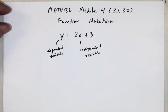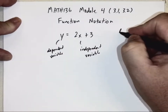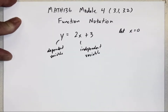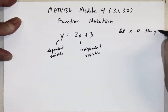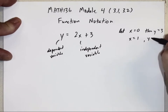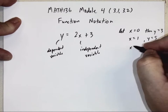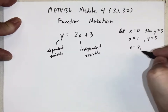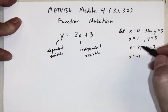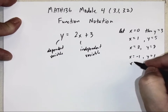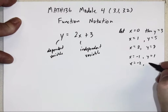You probably learned years ago with these kinds of equations that we can choose some numbers to plug in for x, our independent variable, and then see what y ends up being. If x equals 0, then y equals 3. If x equals 1, then y equals 5. If x is 2, y equals 7. It's also helpful to choose negative numbers: if x equals negative 1, y equals 1; if x is negative 2, y equals negative 1.